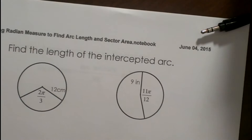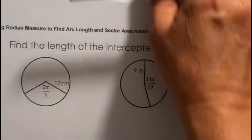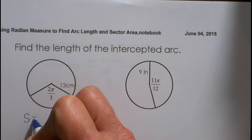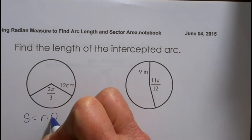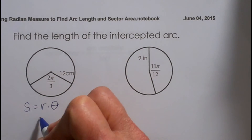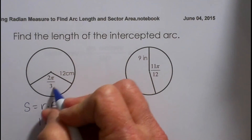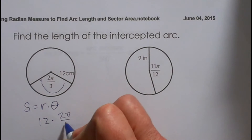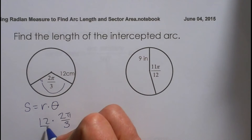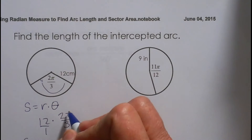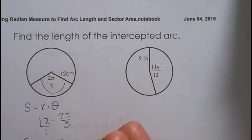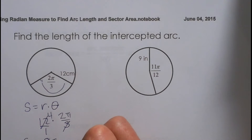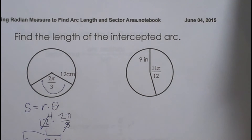Let's find the length of the intercepted arc. Arc length equals radius times theta. Our radius is 12, and our central angle in radians is 2 pi thirds. So to find the arc length we multiply 12 times 2 thirds pi. 3 goes into 12 giving 4, and 4 times 2 is 8 — so our arc length is 8 pi.